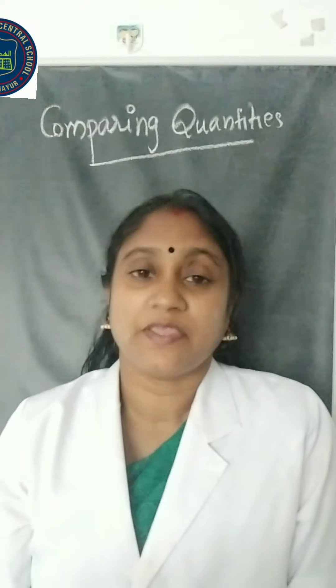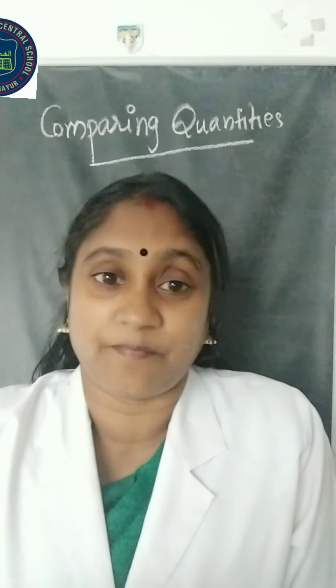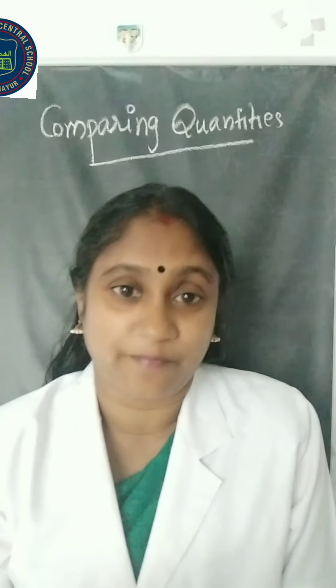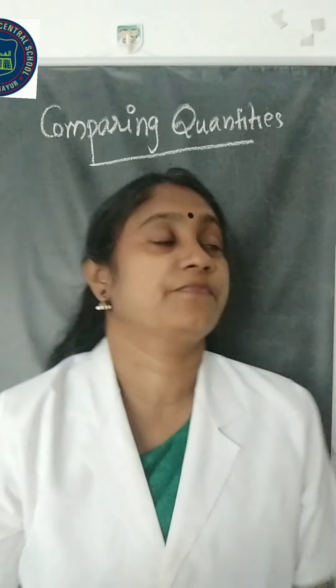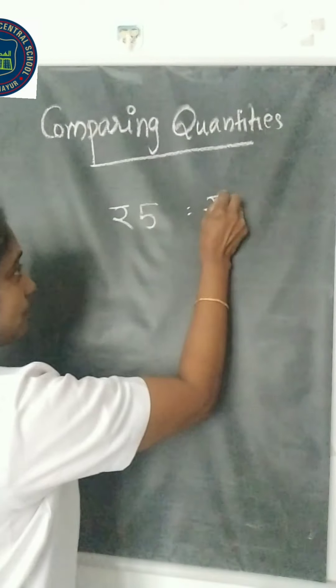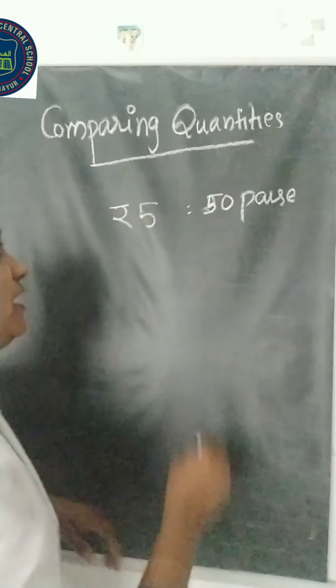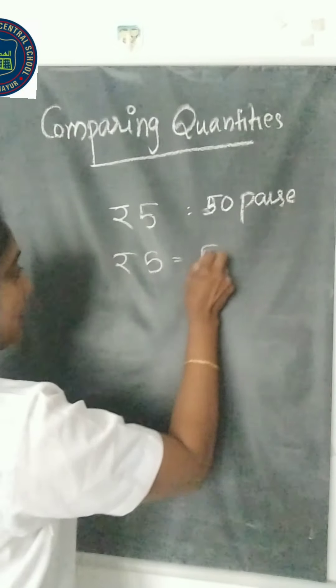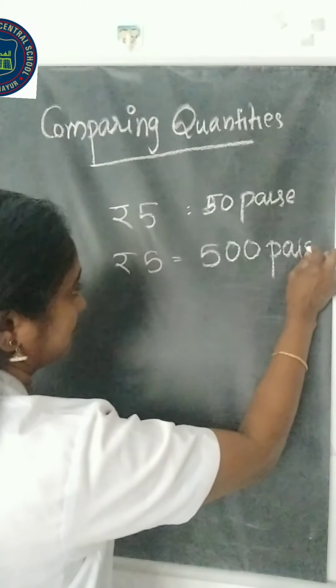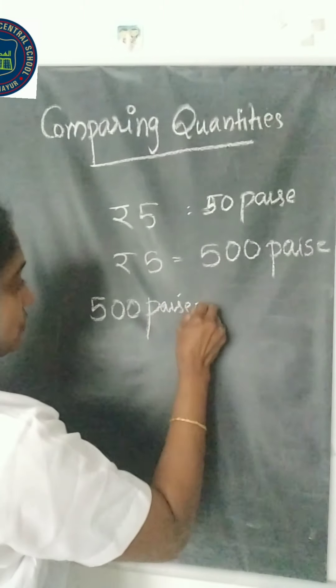Compare rupees 5 to 50 paise. One number has the unit paise and the other has the unit rupees, so we have to convert rupees to paise. We know the relation: 1 rupee equals 100 paise. Therefore, 5 rupees equals 500 paise. So the question becomes: compare 500 paise to 50 paise.